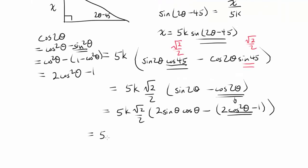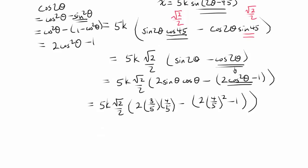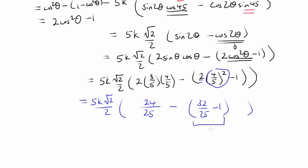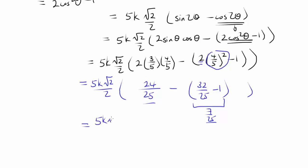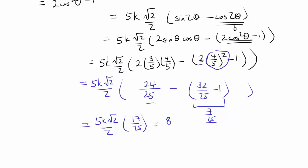Plugging in sin(θ) = 3/5 and cos(θ) = 4/5: sin(2θ) = 2·(3/5)·(4/5) = 24/25, and cos(2θ) = 2·(16/25) − 1 = 32/25 − 1 = 7/25. So sin(2θ) − cos(2θ) = 24/25 − 7/25 = 17/25. Therefore x = 5k · (√2/2) · (17/25) = 17k√2/10.